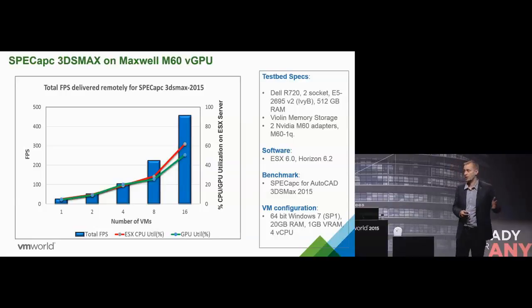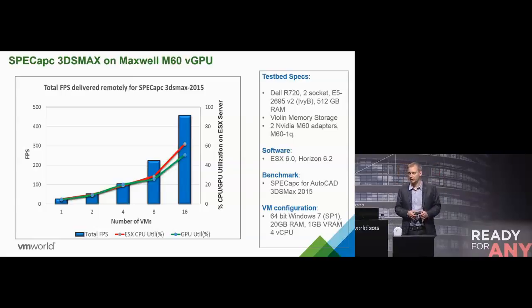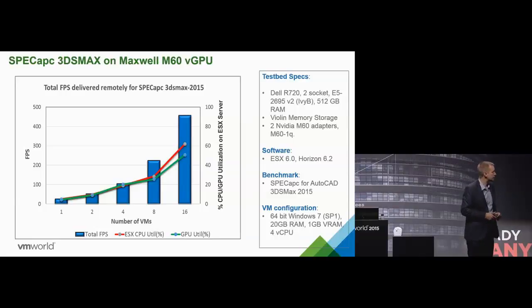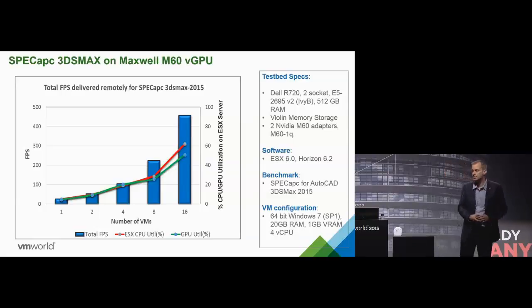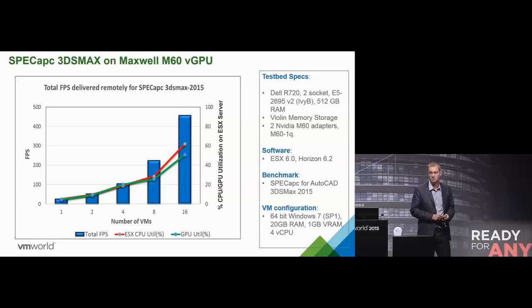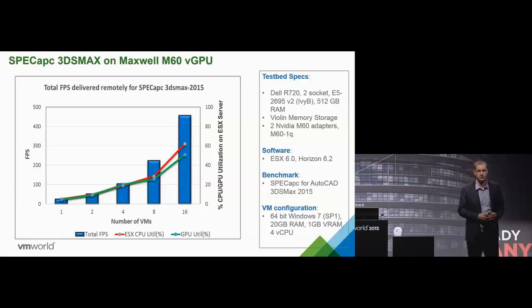This is where View Planner comes in — run those applications first and see how your workloads perform. In this test with Dell R720s, the VM configuration was 1 GB VRAM with the K240Q profile. 20 GB RAM seems a lot, but for 3D applications it isn't uncommon — I see at least 16 GB for most customers. For example, a car manufacturer in the UK has users with a minimum of 16 GB RAM for 3D work.